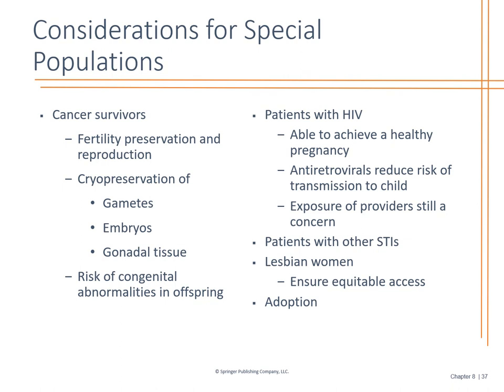For cancer survivors, fertility preservation is important. Some women will freeze their eggs and men will freeze their sperm if undergoing cancer treatments prior to starting them — we have those cryopreservation options. We look at the risk of congenital abnormalities and examine genetic factors. For patients with HIV, it used to be that you couldn't safely have a child, but now you can. There's still possible exposure, however we have antiretrovirals and something similar to a bloodless C-section to help limit blood crossing. Options also include adoption. For lesbian women, make sure you don't have that stigma — regardless of your personal feelings, you need to have those resources for all special population types.